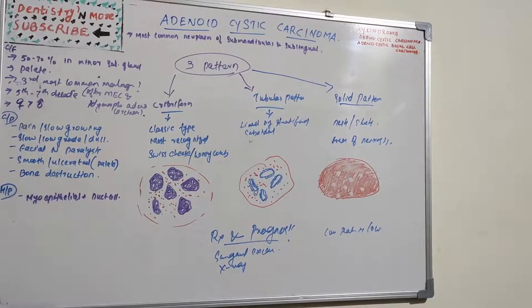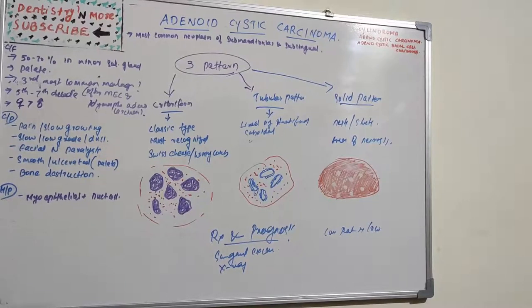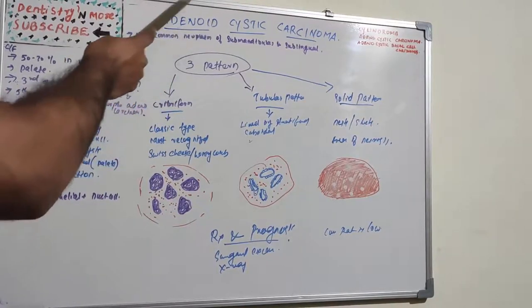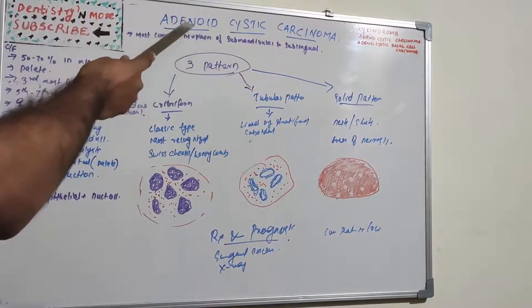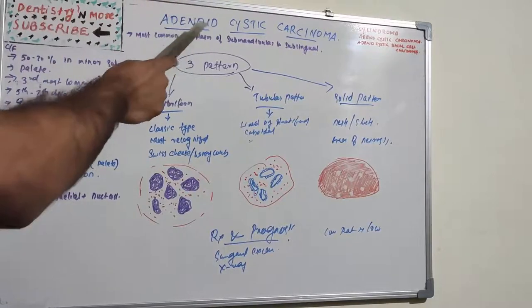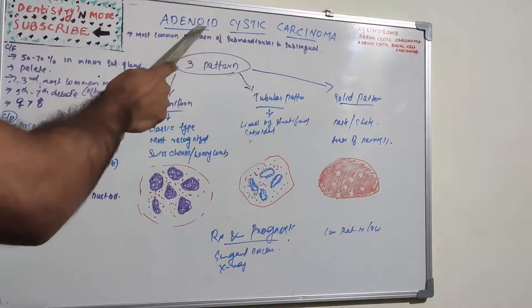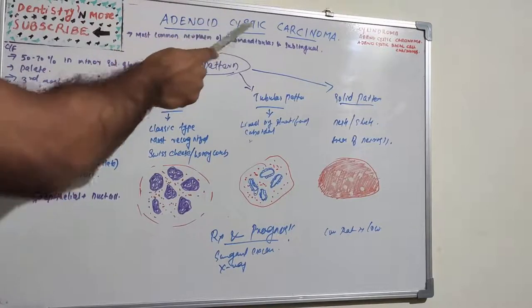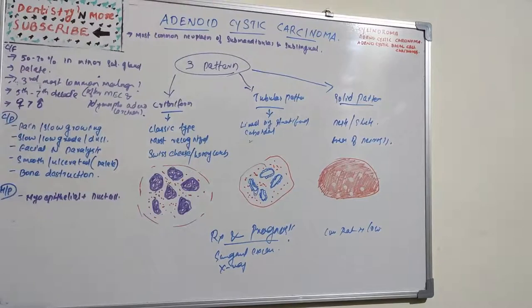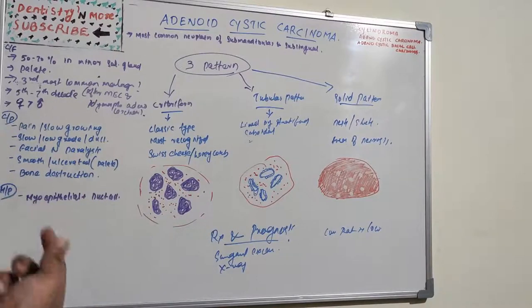In summary, adenoid cystic carcinoma is an important topic frequently asked as a short note, similar to mucoepidermoid carcinoma. It is a malignant neoplasm occurring in gland-like salivary structures, also known as cylindroma, adenoid cystic carcinoma, or adenocystic basal cell carcinoma. Thank you, and I'll be back with another topic in Dentistry MO.